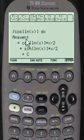And here's the answer. Cosine of log of x times x divided by 2 and sine of log of x times x divided by 2 plus c.